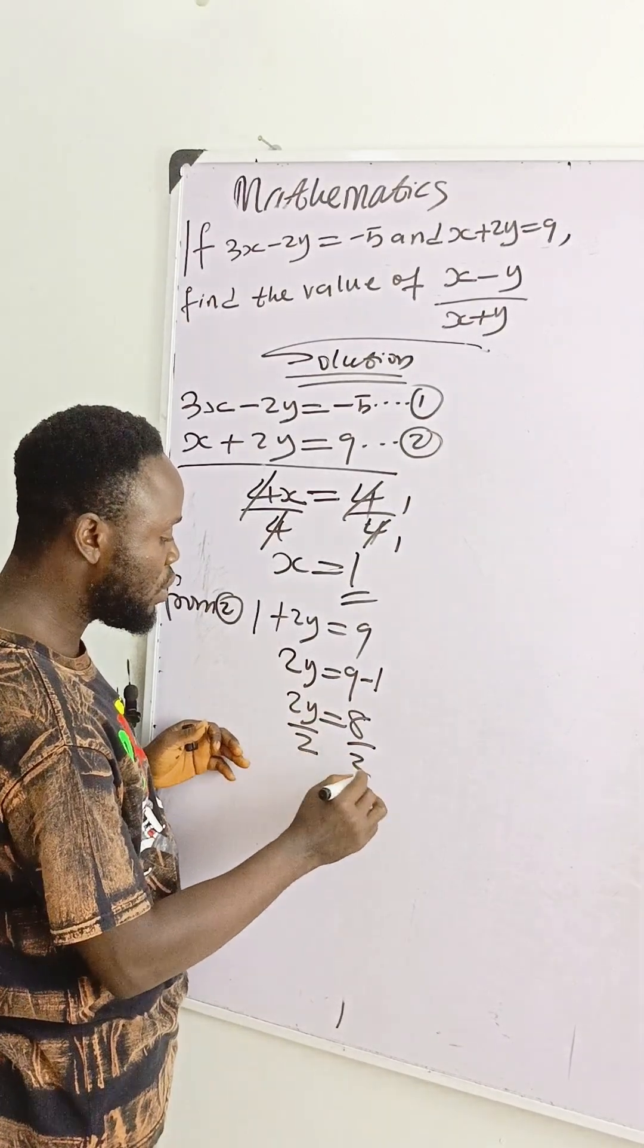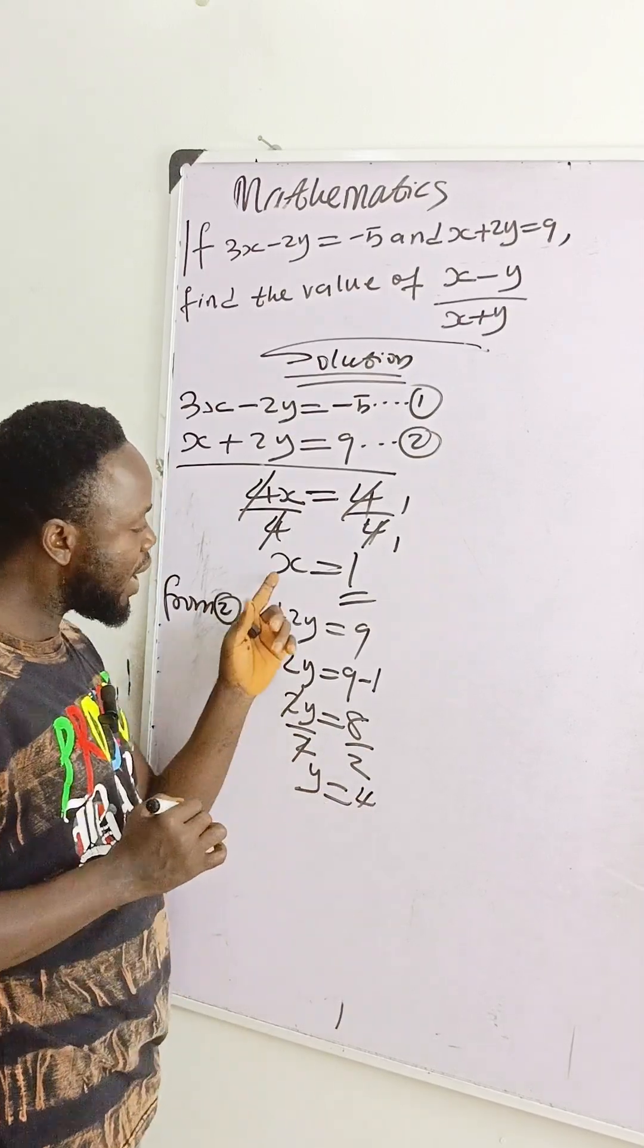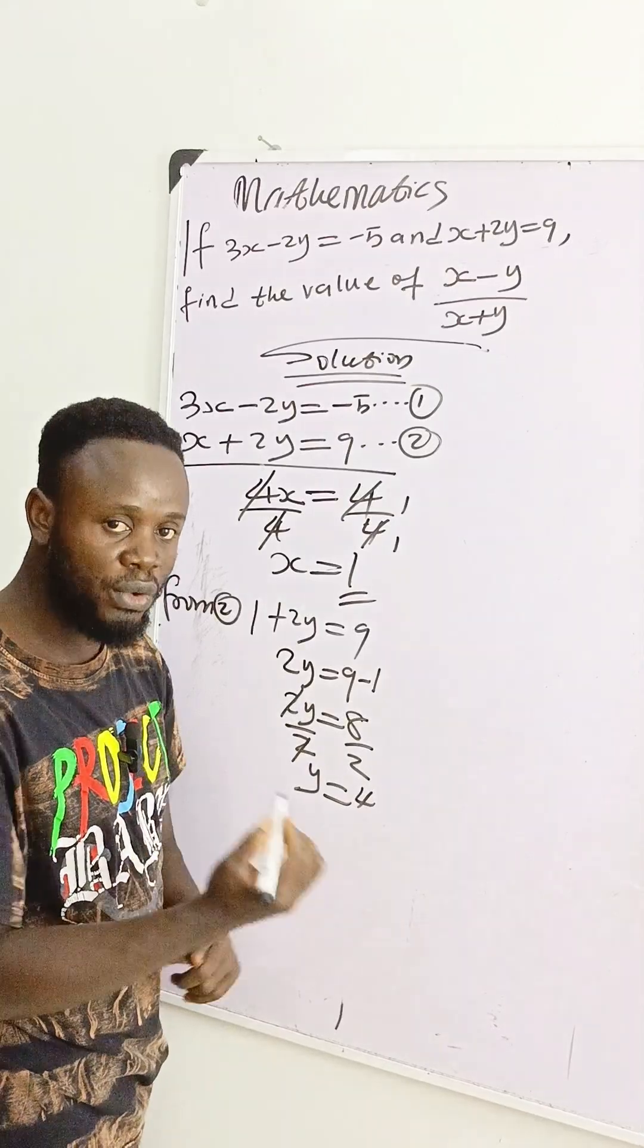Divide both sides by 2. And then we have this. 2 divided by 8 will give you 4. So our x is equal to 1 and y is equal to 4.